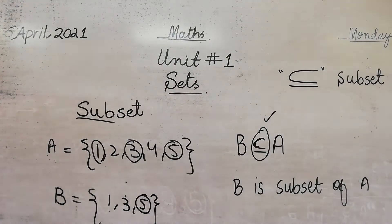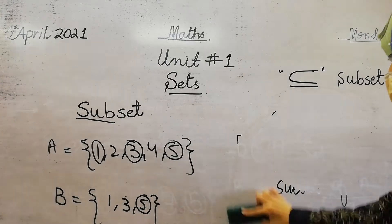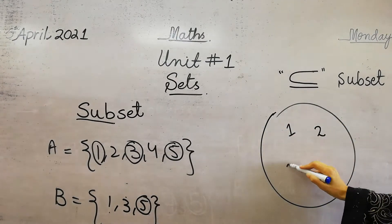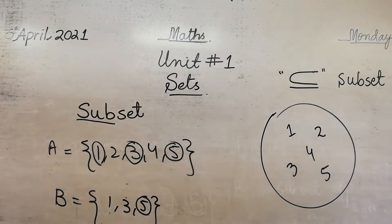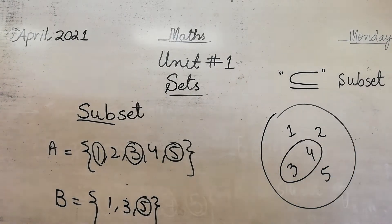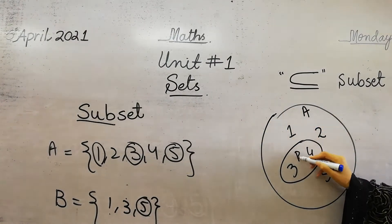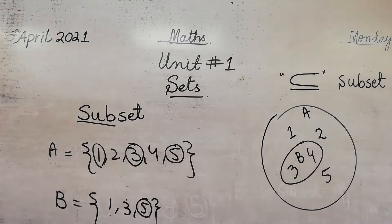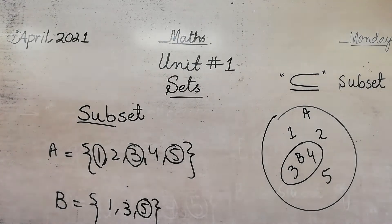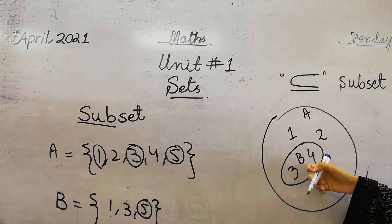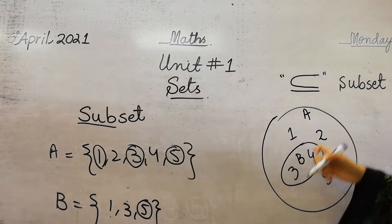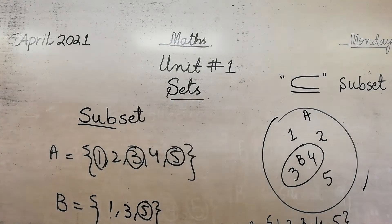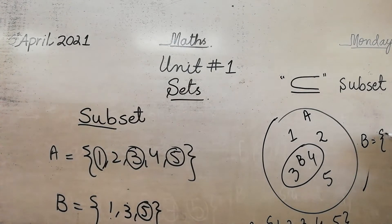To make the concept of subset more clear, for example, here is a circle — this contains 1, 2, 3, 4, 5. This is set A with elements 1, 2, 3, 4, 5, and set B contains elements 3 and 4. So this is set B. Set A has elements 1, 2, 3, 4 and 5, and set B contains 3 and 4.